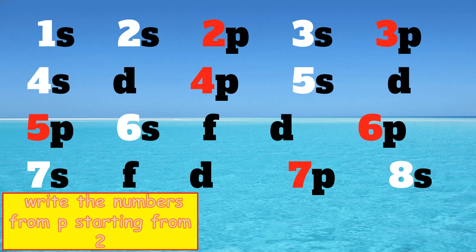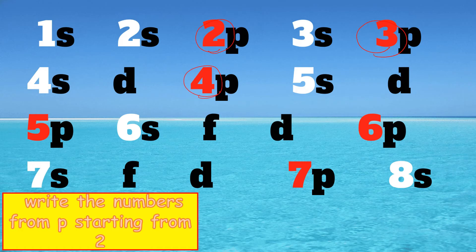Next, write the numbers from P starting from 2. So on your screen, you're going to write 2p, 3p, 4p, 5p, 6p, and 7p.